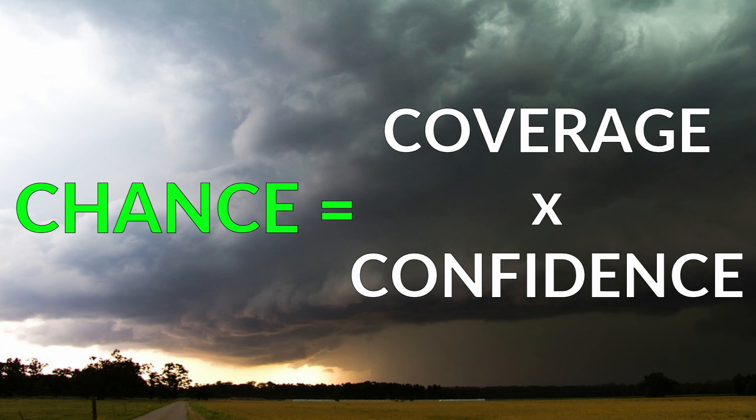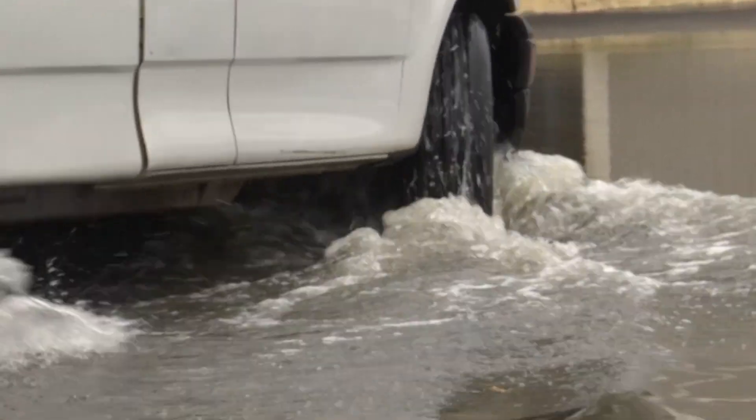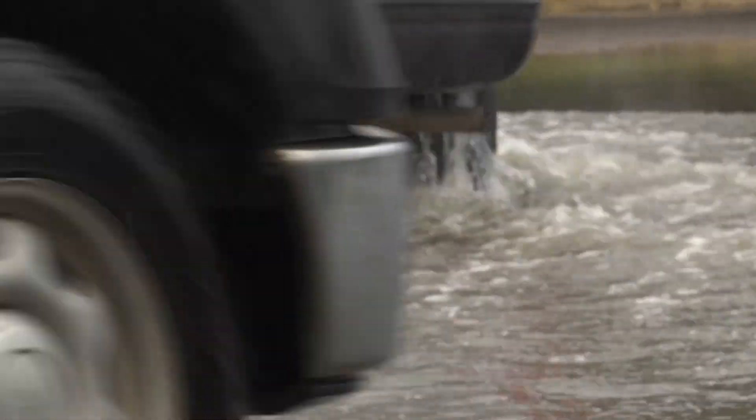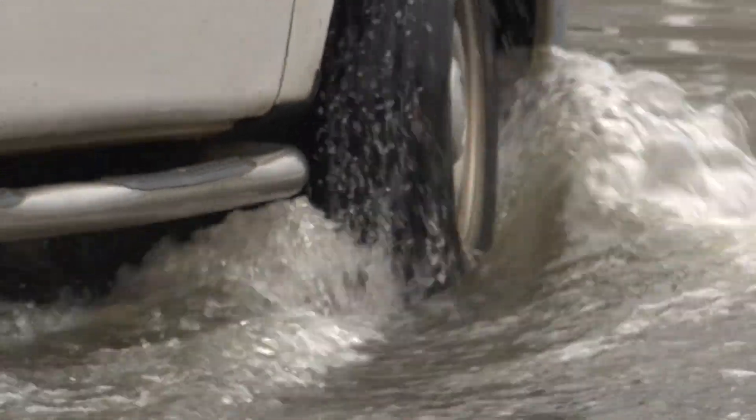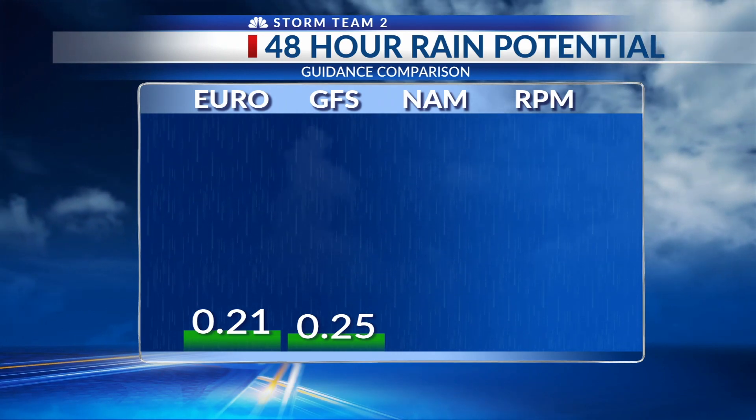We determine that chance with a simple equation: chance equals the confidence that precipitation will occur somewhere in the forecast area, multiplied by the coverage of that rain. For example, if we are positive that a system will drop rain over 60% of the area, we have a 60% chance of rain. But if weather models disagree with one another — which they usually do — our confidence can go down. If we have 50% confidence that 80% of the area will see rain, we get a chance of 40%.